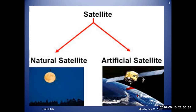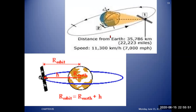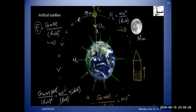Here you can see a satellite revolving around the earth. Some points to remember: the speed of a satellite is about 11,300 kilometers per hour, which is 7,000 miles per hour. The orbit distance from the surface of the earth to the satellite is calculated using the radius of the earth plus the height above the surface. All satellites use the gravitational force formula to calculate the force at a certain height h using Newton's law of gravitation.